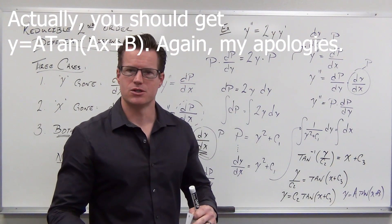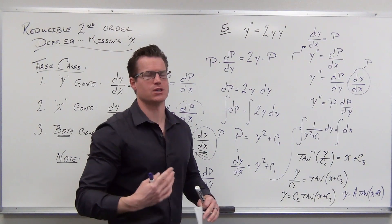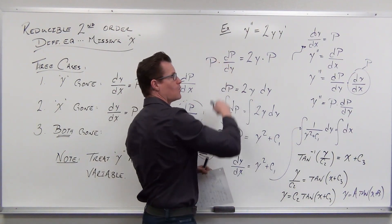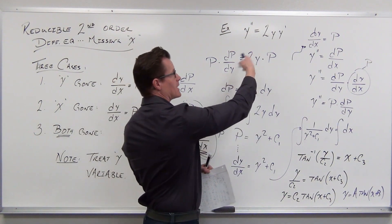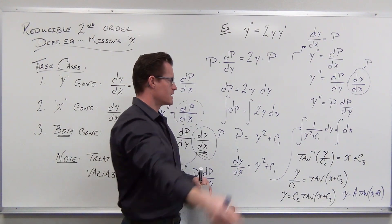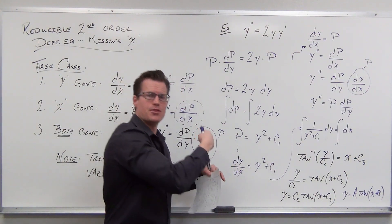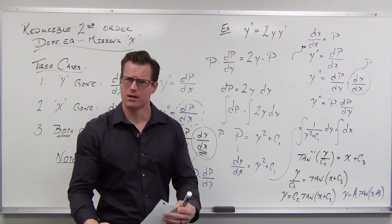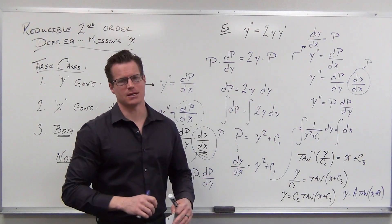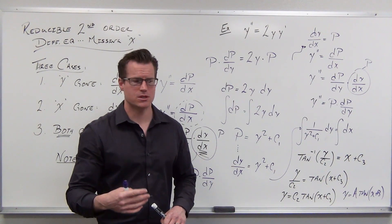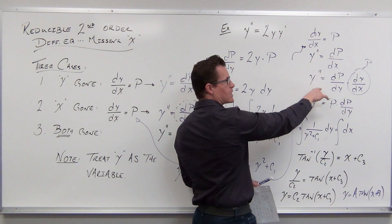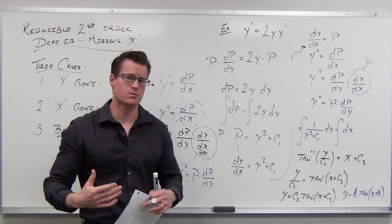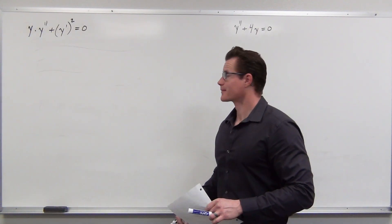I always like to explain why we're doing this — it never stuck with me unless fully explained. The extra p in y'' = p·dp/dy comes from the chain rule. We use dp/dy instead of dp/dx because we have no x variables. Once we solve for p, we recognize it as dy/dx, switch back to x as independent variable, and solve again.